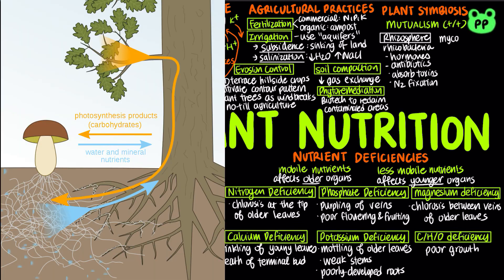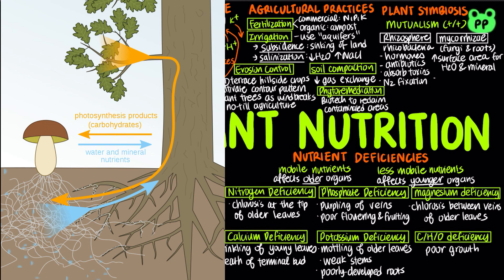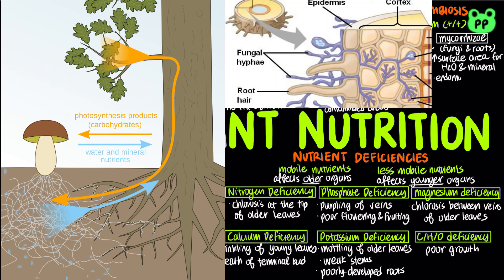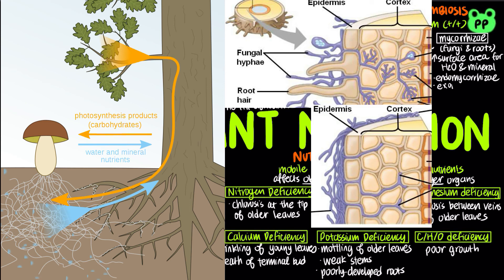Mycorrhizae refers to a mutualistic association of fungi and roots. The fungus benefits from a steady supply of sugar from the host plant, whereas the host plant benefits because the fungus increases the surface area for water uptake and mineral absorption. The two types, endomycorrhizae, which penetrate plant root cell walls, and ectomycorrhizae, which do not penetrate plant cell walls, have been covered in a previous video on fungi.